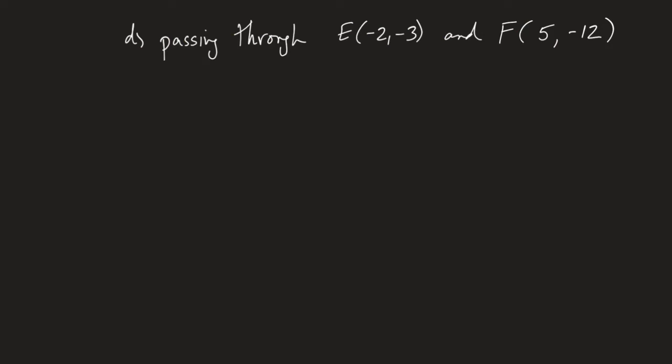Let's try another one. Look at D: build the equation of the line passing through E at negative 2, negative 3, and F at 5, negative 12. I think we should actually be able to go start to finish on this one. Go through and build the equation of the line passing through E and F. Pause the video now.